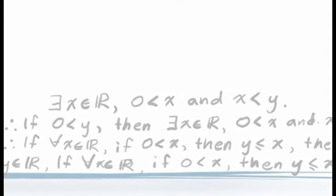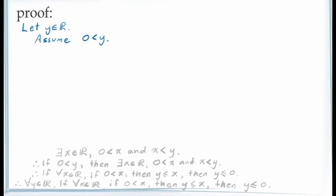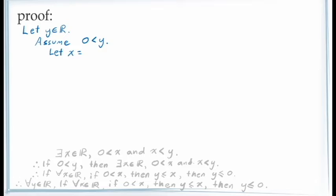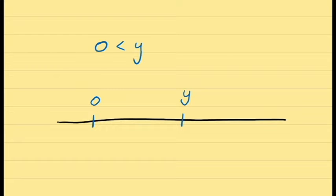Looking at the statement we need to demonstrate — for at least one value of x in the real numbers, 0 is less than x and x is less than y — since this involves an existential quantifier, we need to use the principle of existential generalization. This means assigning a specific value to x. Let's get out a scrap piece of paper. Our assumption is that y is greater than 0, which on the number line means 0 is here and y is to the right. We need x to be greater than 0 and less than y, so x must land somewhere between them. One simple idea is to assign x to be the value halfway between 0 and y, which is y over 2.